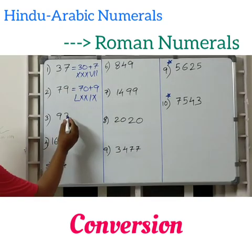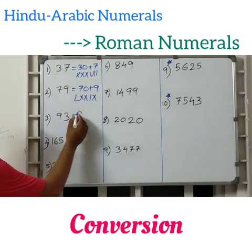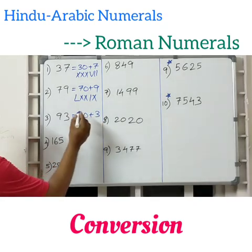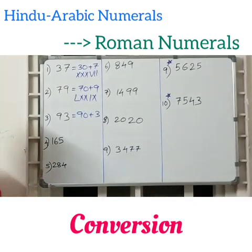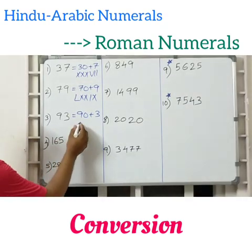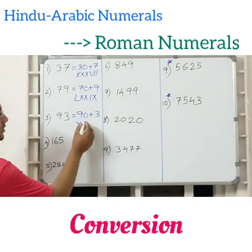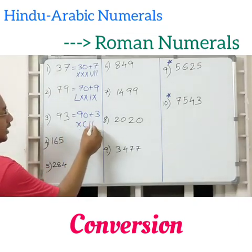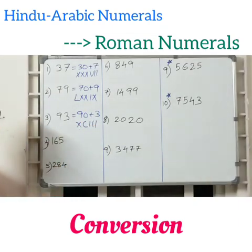Next, 93. Expanded form: 90 plus 3. 90 is nothing but XC, and 3 is nothing but III.